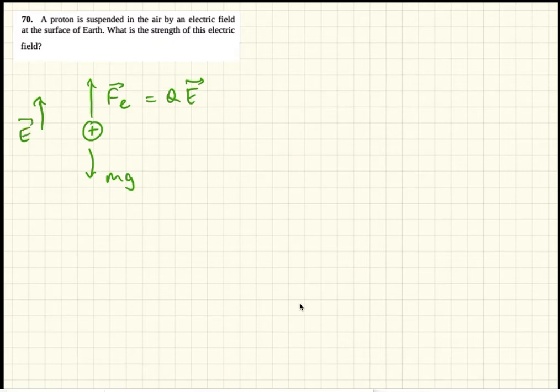Now we'll just do magnitudes. And the charge of a proton is just equal to the charge of an electron. So e times E is mg. So the electric field strength is mass of the proton divided by e.